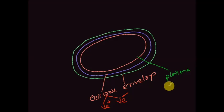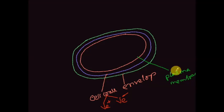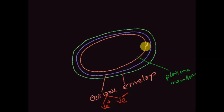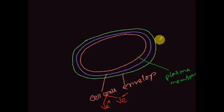The plasma membrane is also called the cytoplasmic membrane or cell membrane. It is composed of two types of components: lipoprotein, which is lipid and protein. On the bacterial cell surface we can see very special types of filamentous structures.